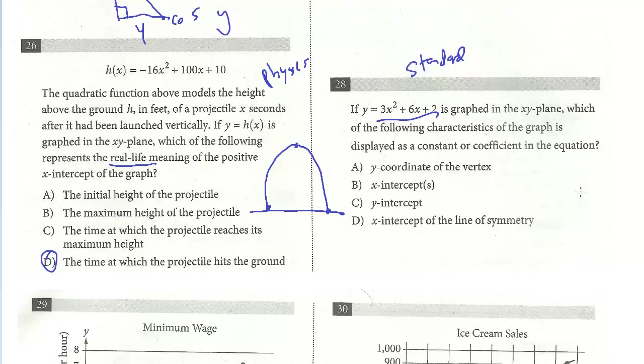which of the following characteristics of this standard form is displayed as a constant? So really what this means is where you actually see the number. It's not like you have to figure it out with, like, if they ask for the vertex for the x-coordinate, that'd be negative b over 2a. That's not displayed as a constant. We don't see negative b over 2a. The only one that's a constant,